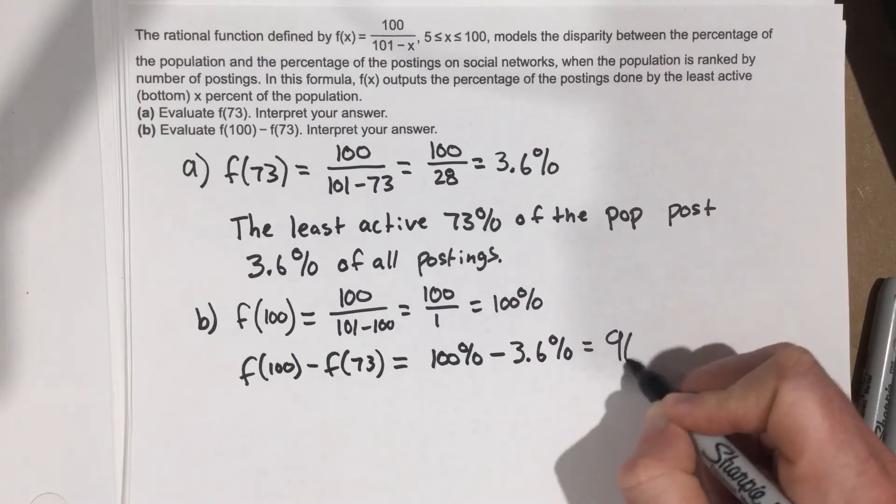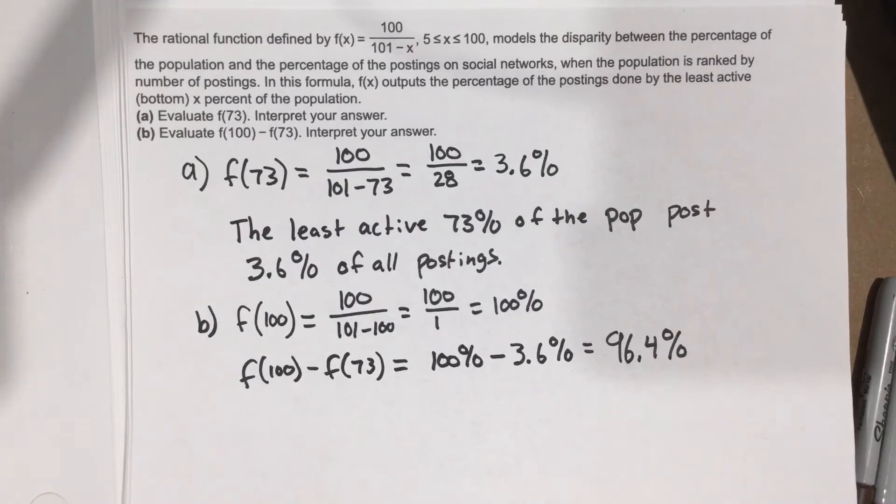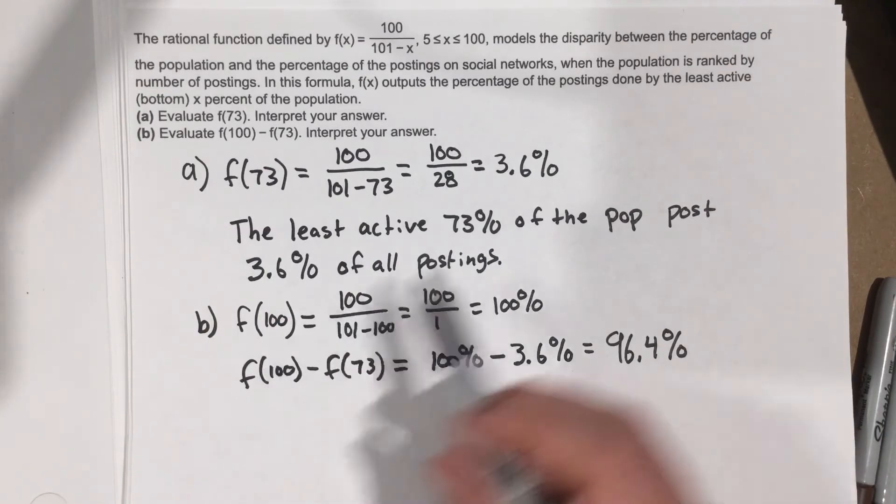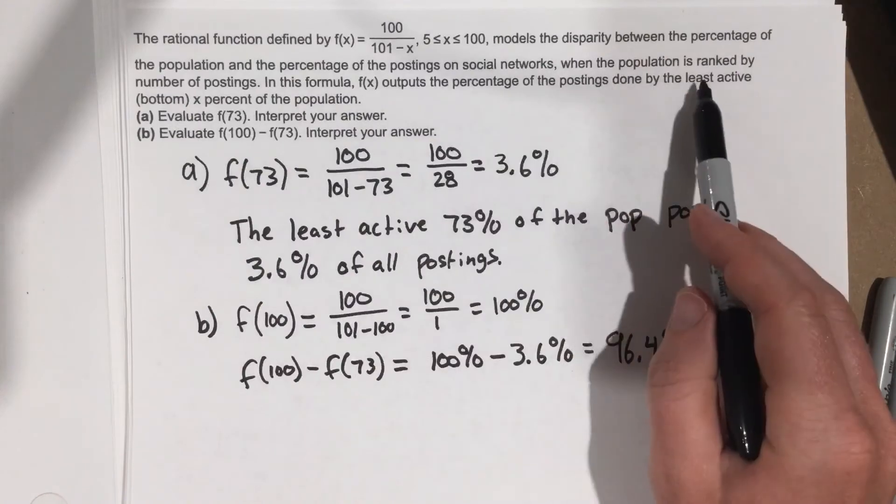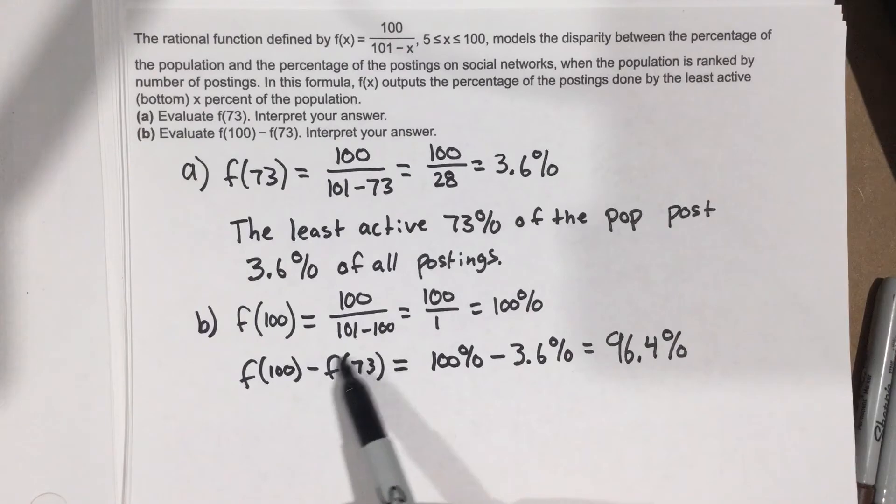So let's interpret that. If we're taking essentially the percentage of least active, 100% minus the 73%, which should give you the percentage of most active.